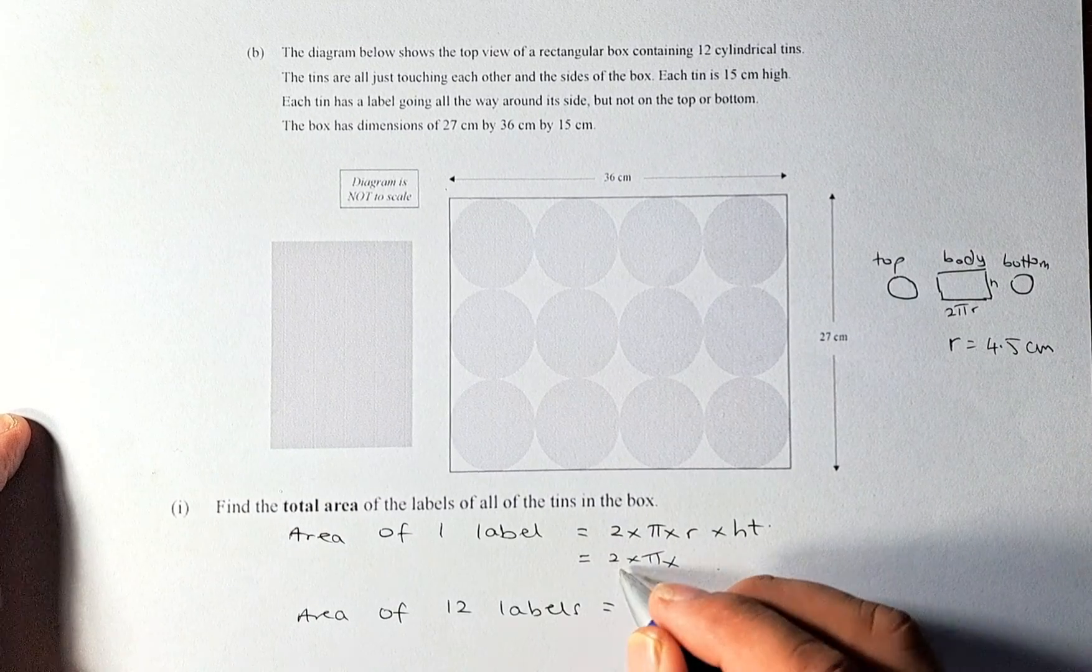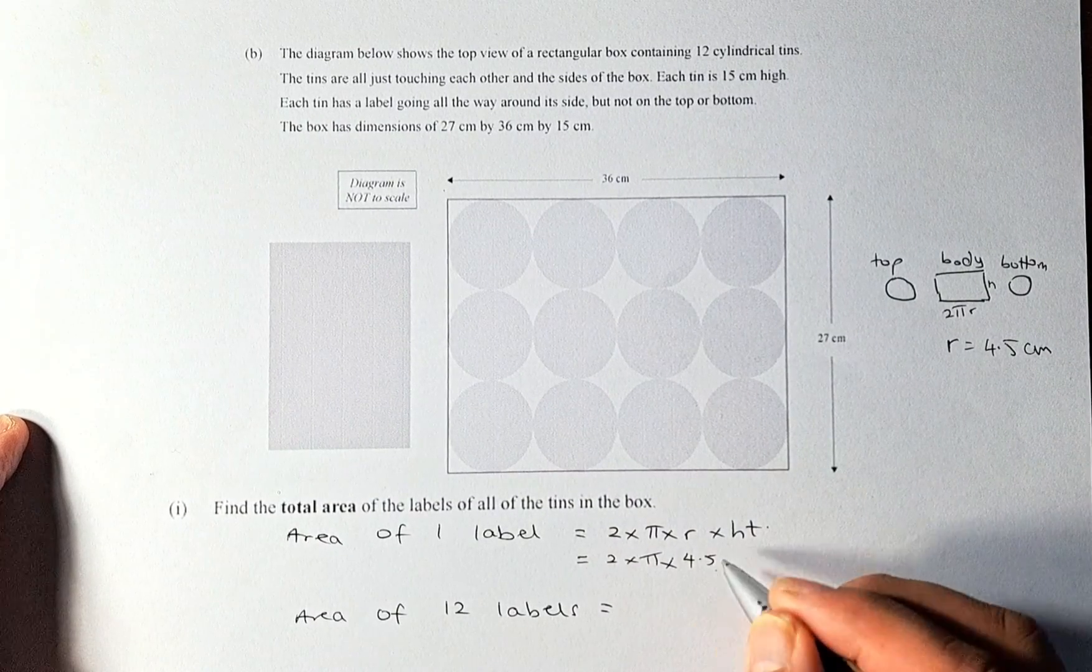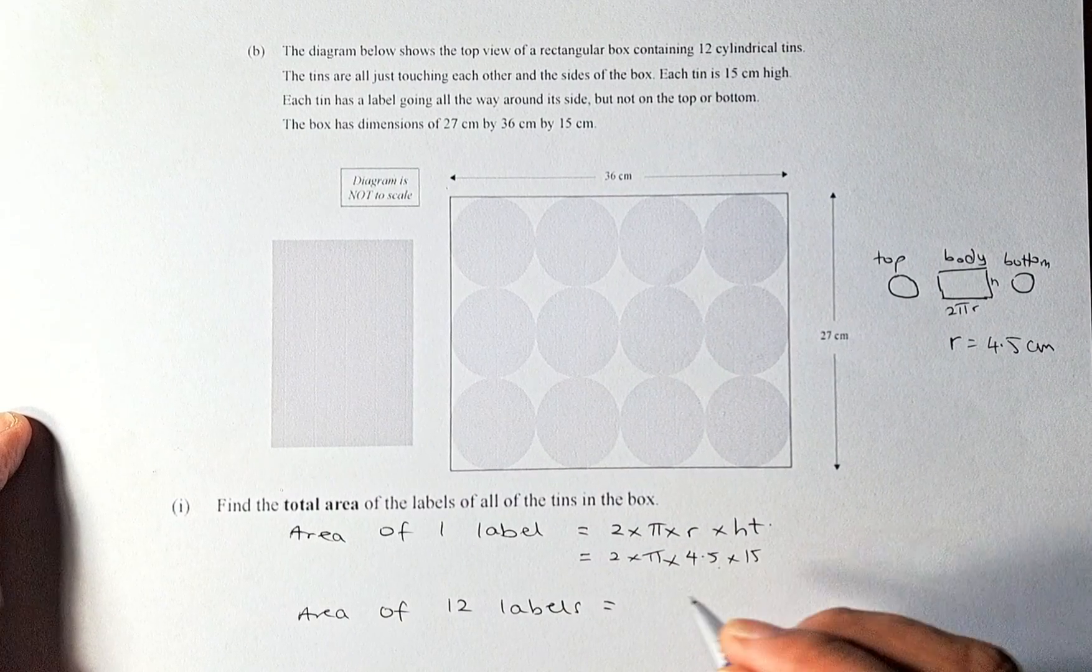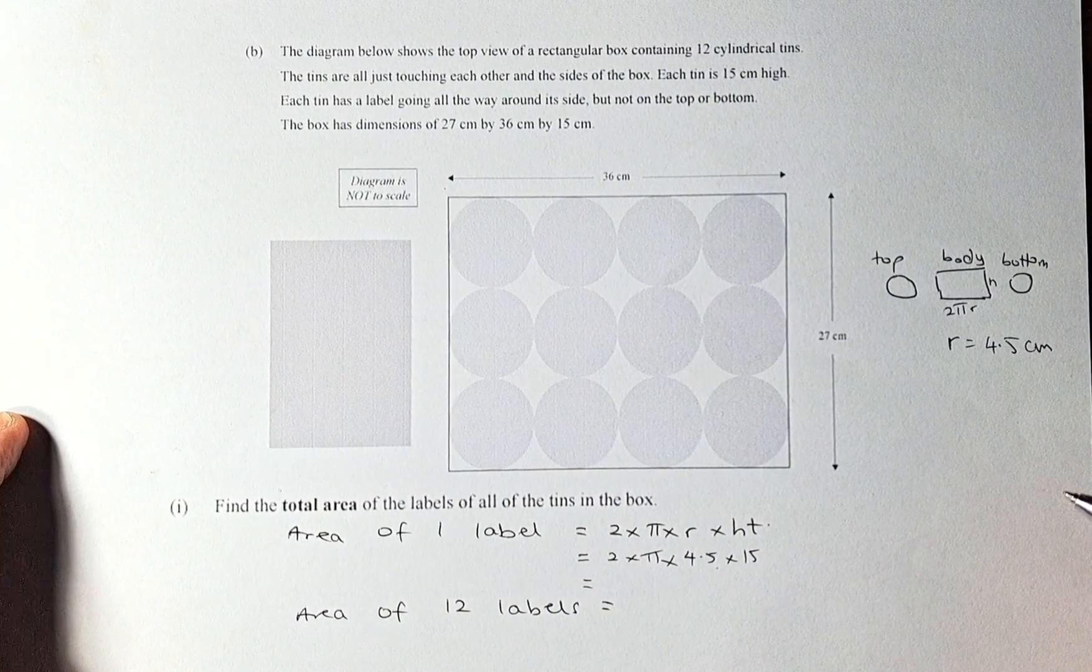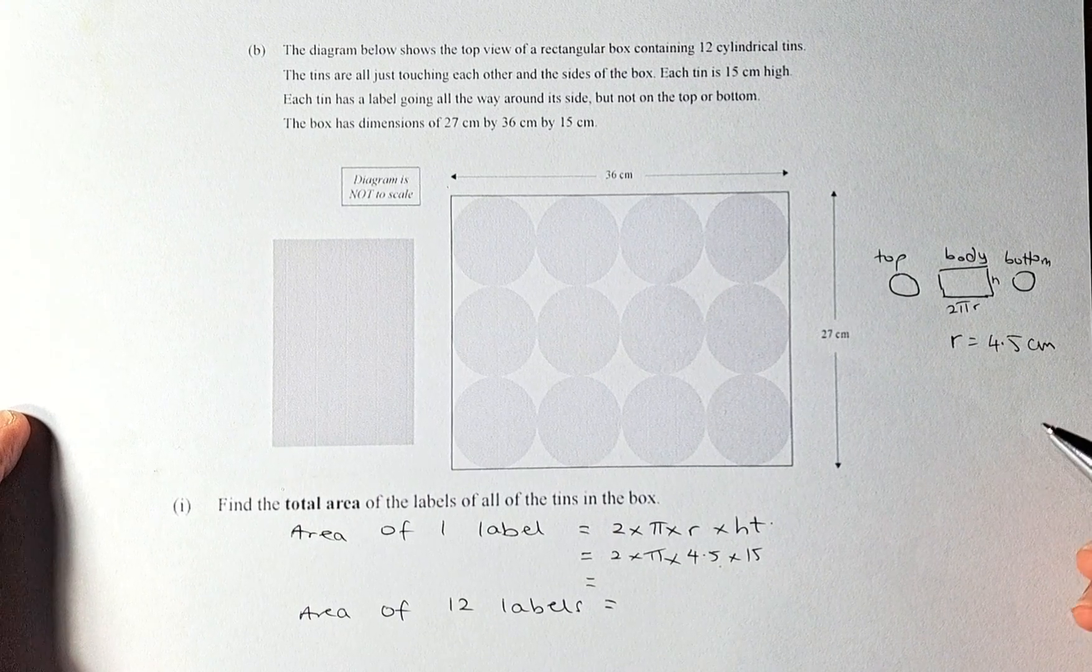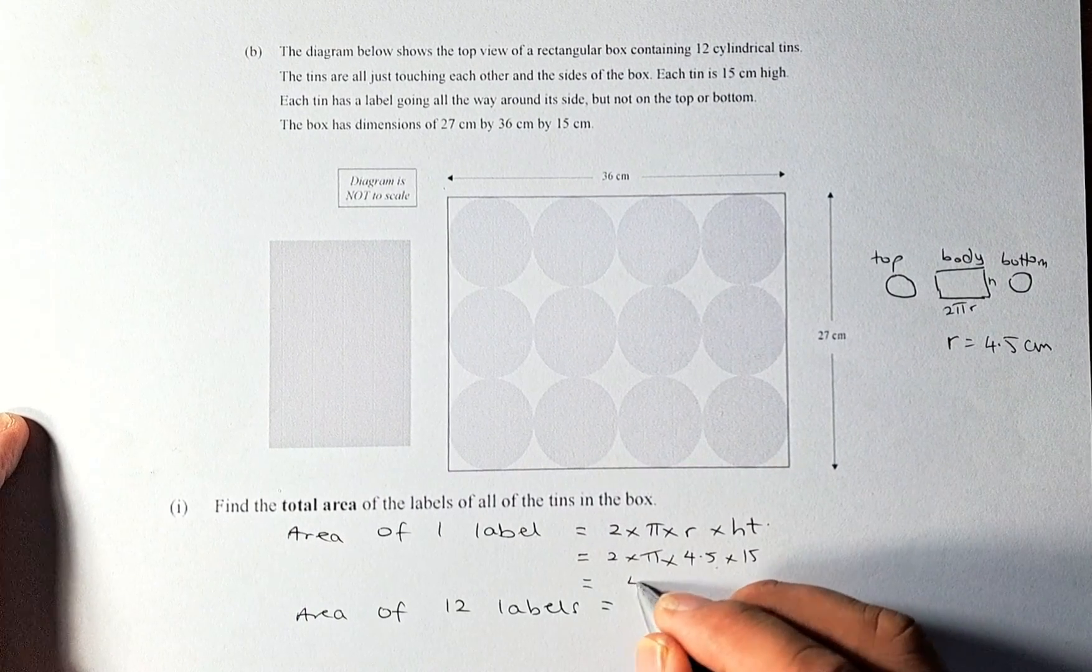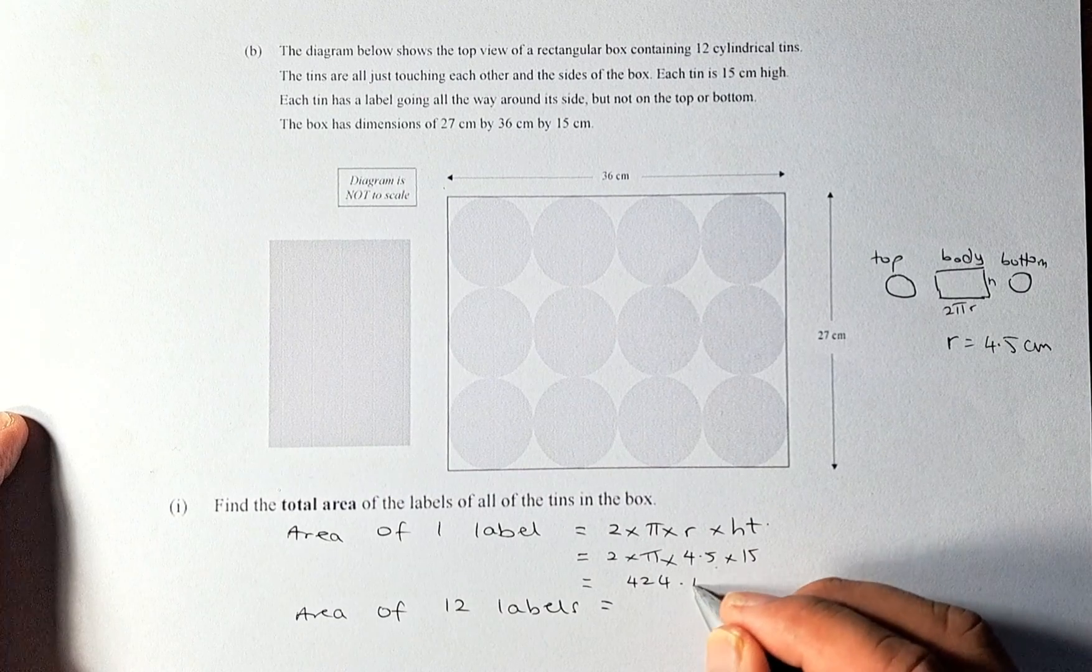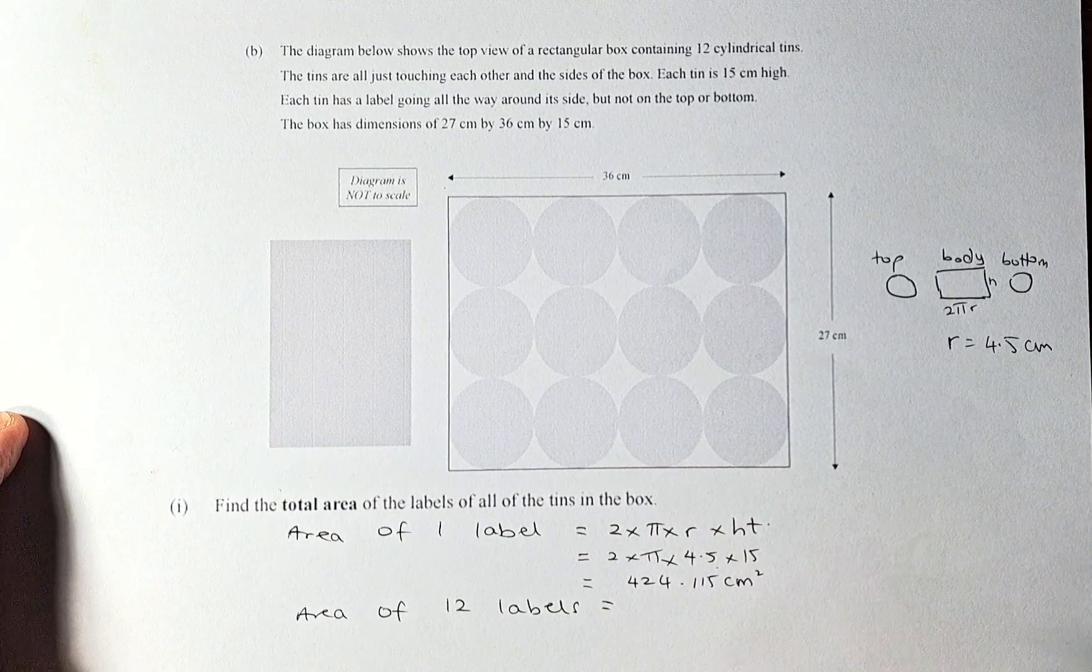So the calculation is 2 times π times 4.5, and the height is going to be 15 centimeters. And then you just put it in your calculator and the answer is going to be 424.115 centimeters squared.